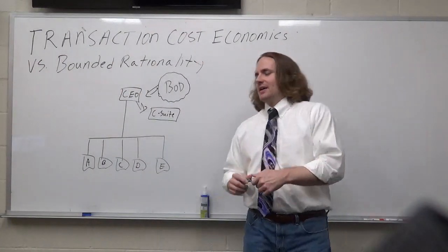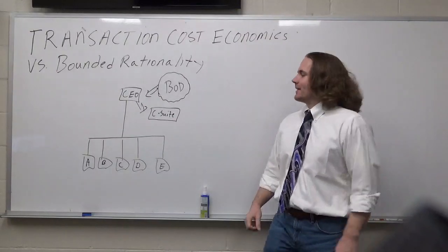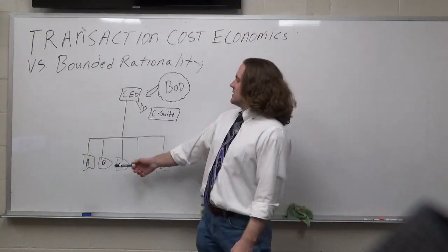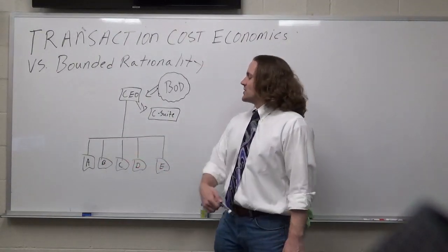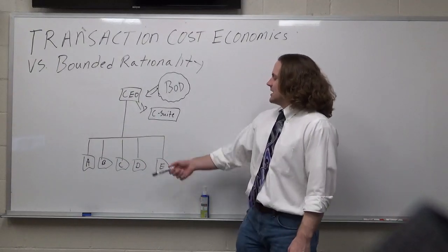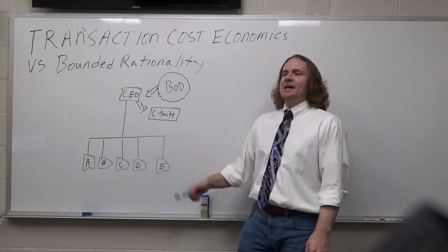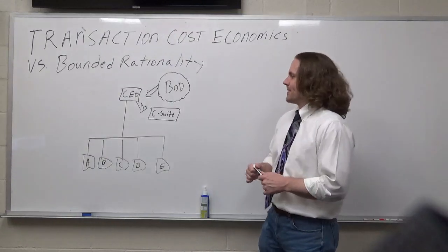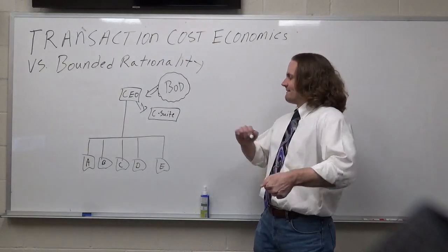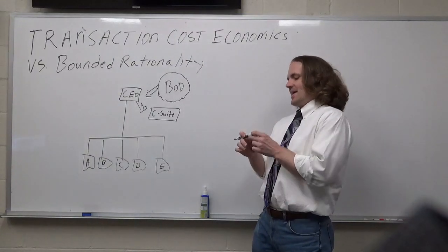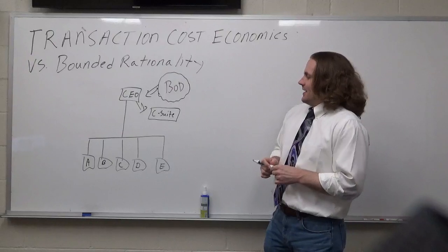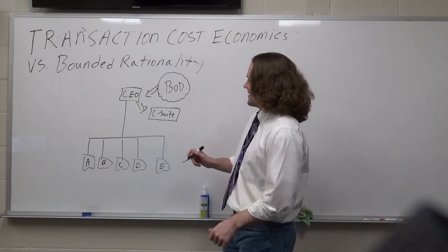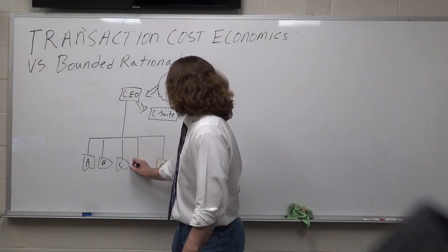Think of it like a car manufacturing company. Unit A makes the tires, Unit B makes the windshields, Unit C makes the engines, D makes the body, and E puts it all together. The question transaction cost economics asks is: should any of these units be contracted out?